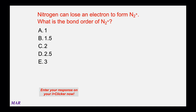Nitrogen can lose an electron to form N₂⁺. What is the bond order of N₂⁺? This question can be answered through molecular orbital theory. Build neutral N₂ and then subtract one electron. For nitrogen, use the 2-1-2-1 pattern — π2p orbitals first, then σ2p, then π*2p, then σ*2p. Pause the video, work on it, and when you have an answer, unpause it.